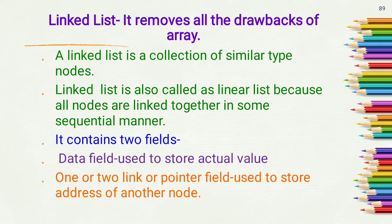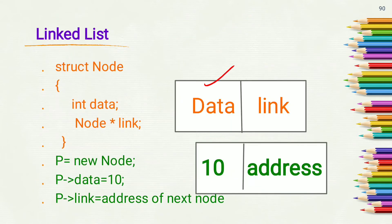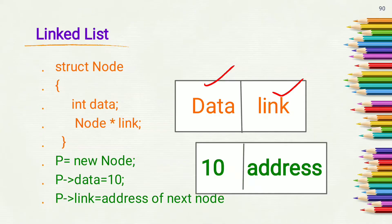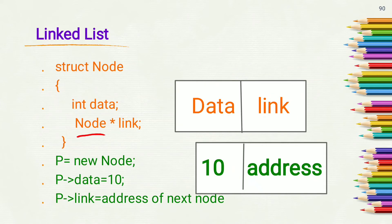A linked list node contains two fields: a data field used to store the actual value, and one or two link or pointer fields used to store the address of another node. To create this node structure containing data field and link field, we use a structure, since this data type is not present in C and C++. Structures are used to create user-defined data types. We write: struct node { int data; node* link; }; Here link is the pointer which stores the address of the next node, so its data type is node type — this is a self-referencing structure.